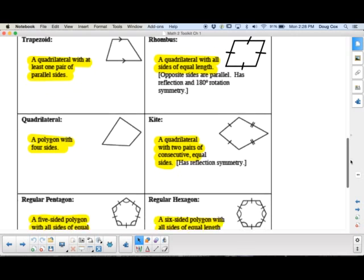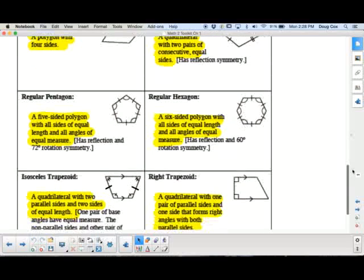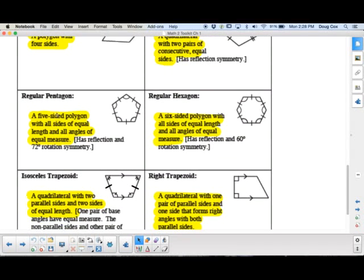Moving on. We have a few more here. We have the regular pentagon. So that's a five-sided polygon. And in this case, all sides are of equal length. So you'll see the slash mark all the way around there, a little tick mark. And then all angles are of equal measure. So one, two, three, four, five. So all the angles are the same, and that's how we indicate it. Regular hexagon, same thing, except it's six-sided. So all the sides are of equal length. All the angles are of equal measure.